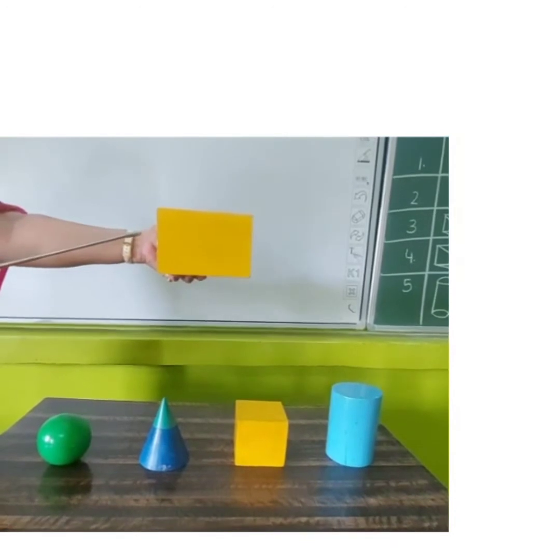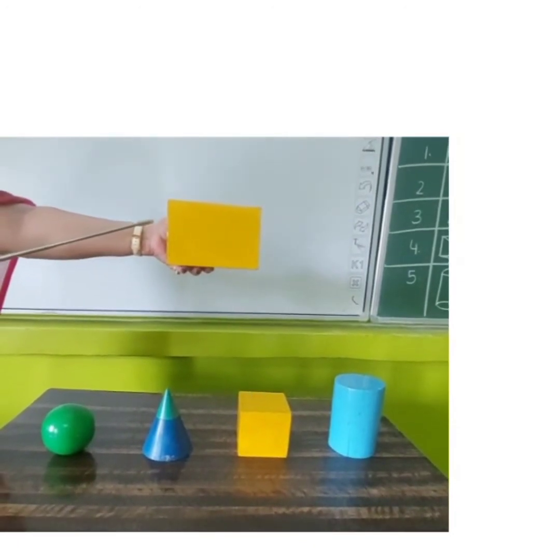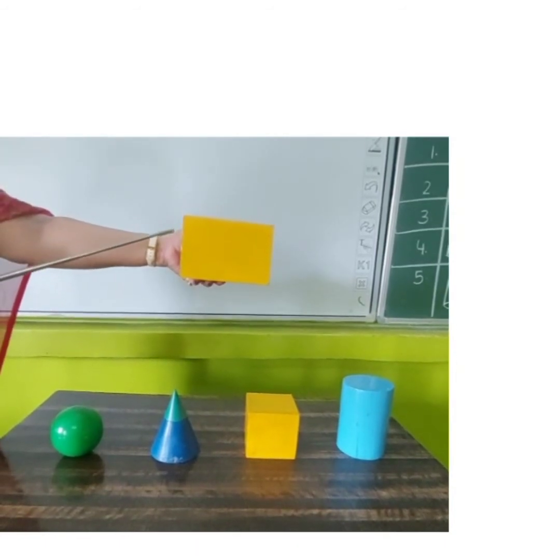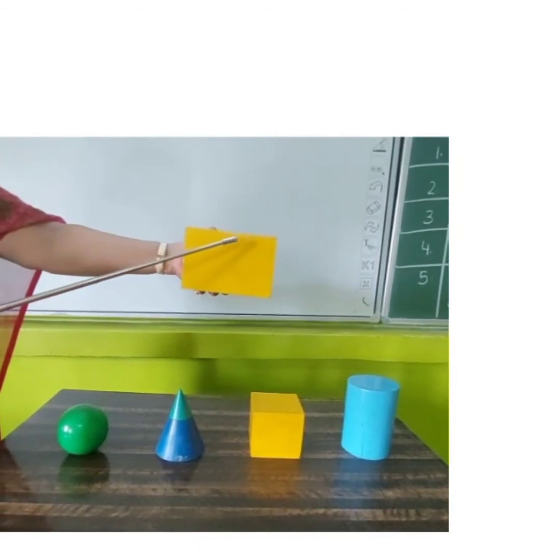Our fourth 3D shape is cuboid. Just like cube, our cuboid also has six faces, twelve sides and eight corners.